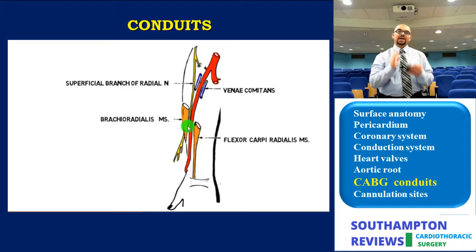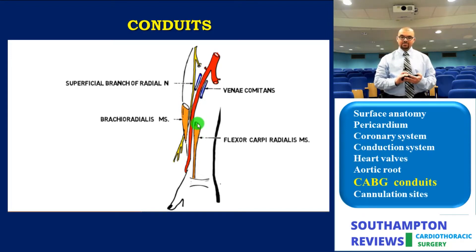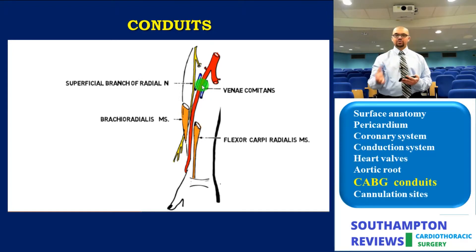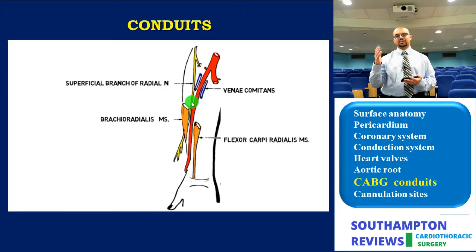The aim is to unfold the medial border of the brachioradialis — that is where the radial artery lies. Dissecting the plane between the brachioradialis and the flexor carpi radialis is where you will find the radial artery; you need to unfold the brachioradialis outward. The two main structures to be cautious of are the venae comitantes — injuring these causes a hematoma obscuring your field and postoperative arm swelling — and the superficial branch of the radial nerve, injury to which leads to paresthesia or hypoesthesia along the lateral forearm and base of the thumb.